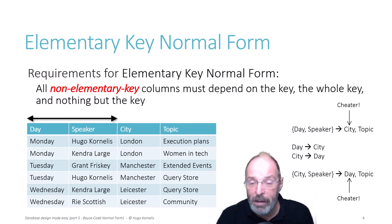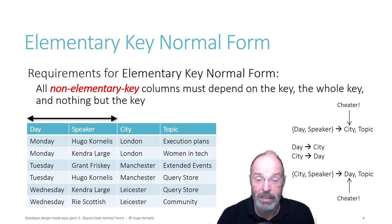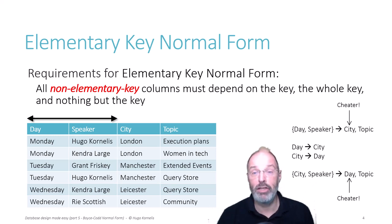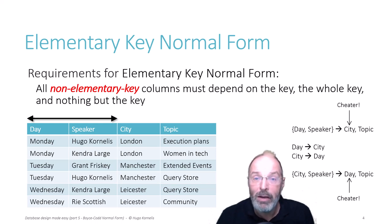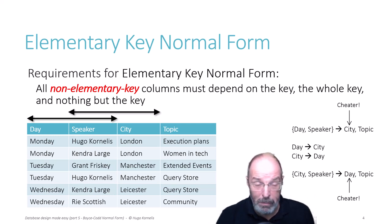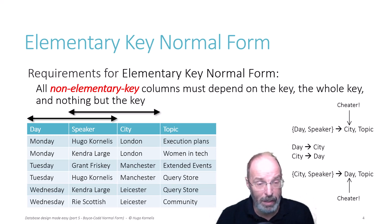The combination of city and speaker also determines the topic. The combination of day and speaker determines the topic, and city by itself determines the day. So given any city and any speaker, because city determines the day, I can give you day and speaker, and day and speaker determines the topic — hence city and speaker determines the topic. Due to these implied dependencies, there is also an implied key on speaker and city. Now we have overlapping keys, which means we should check for Boyce-Codd normal form. In this case, Boyce-Codd normal form is not satisfied because city and day are both dependent on part of a candidate key.